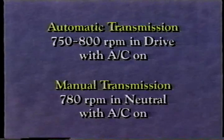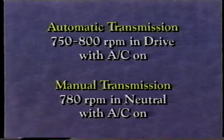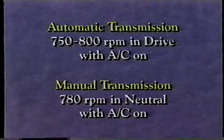For trucks with manual transmissions, the specification is 780 RPM, with the transmission in neutral and the air conditioning on. Idle speed that is out of adjustment can cause surging, rough idle, or stalling.